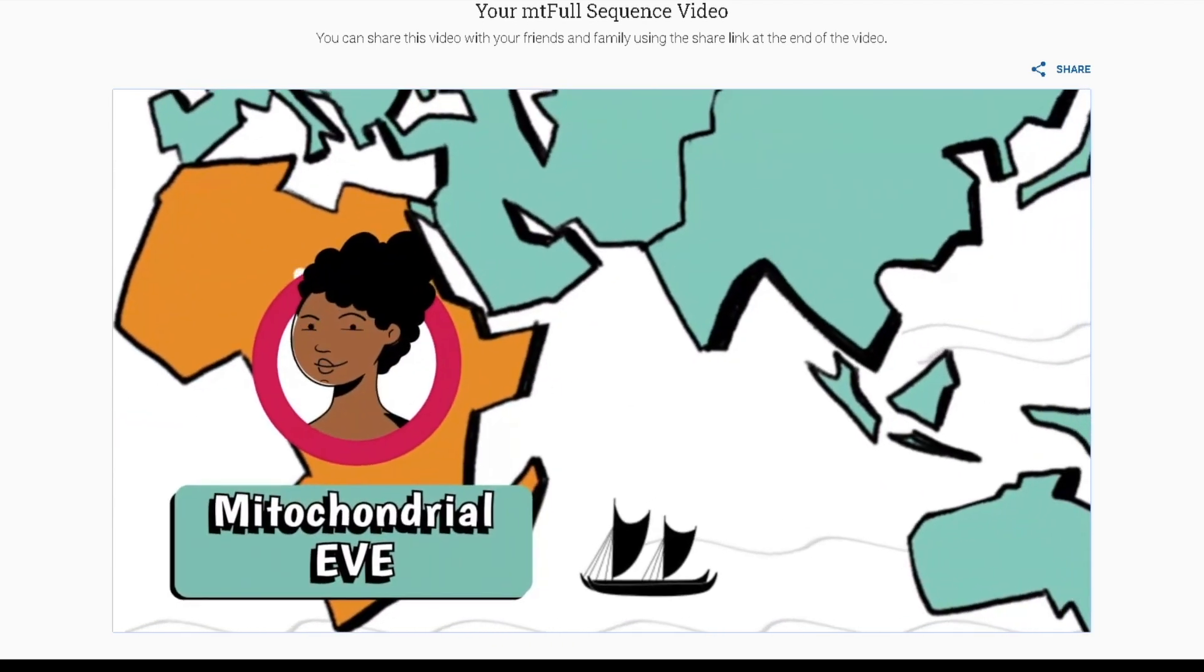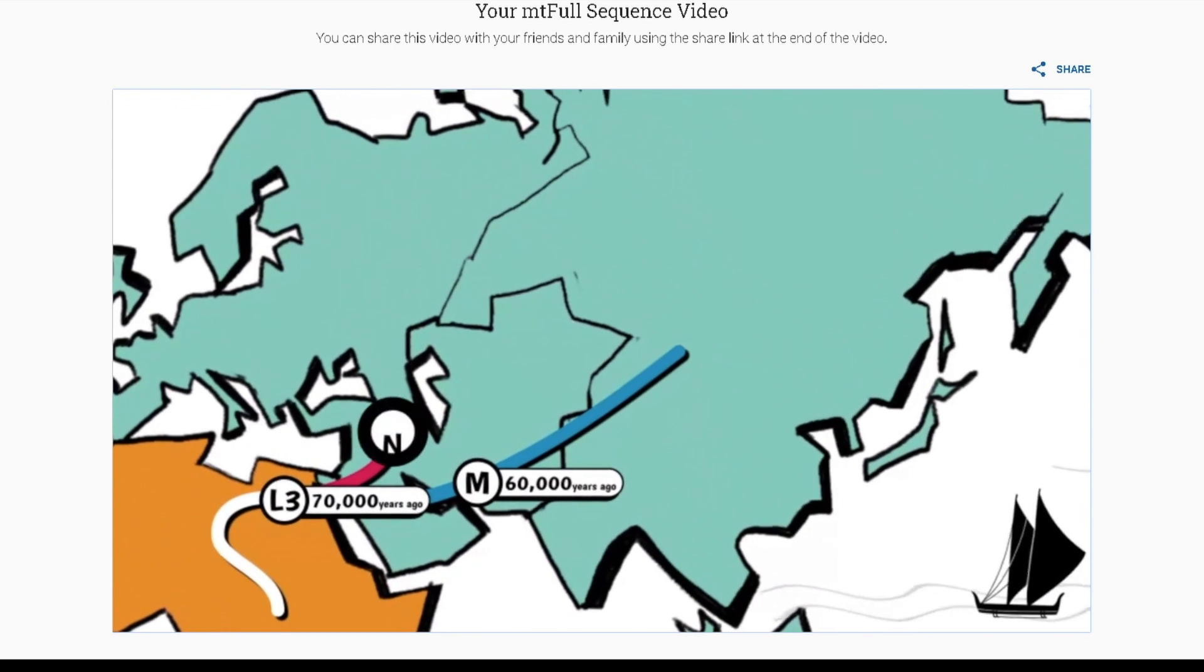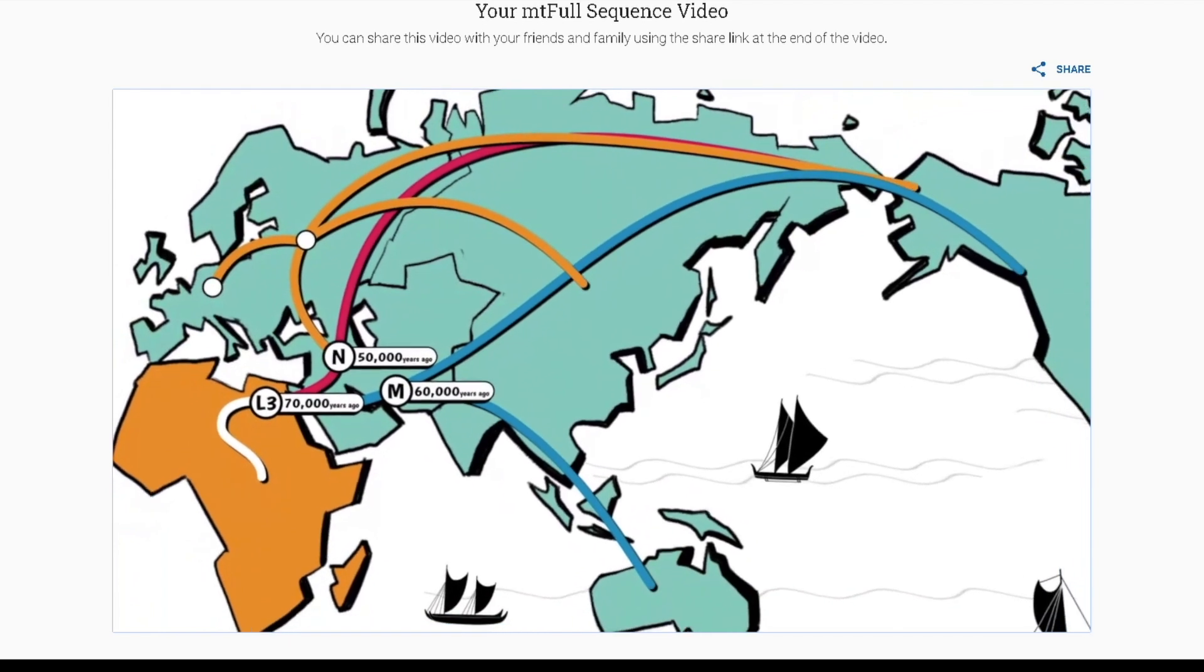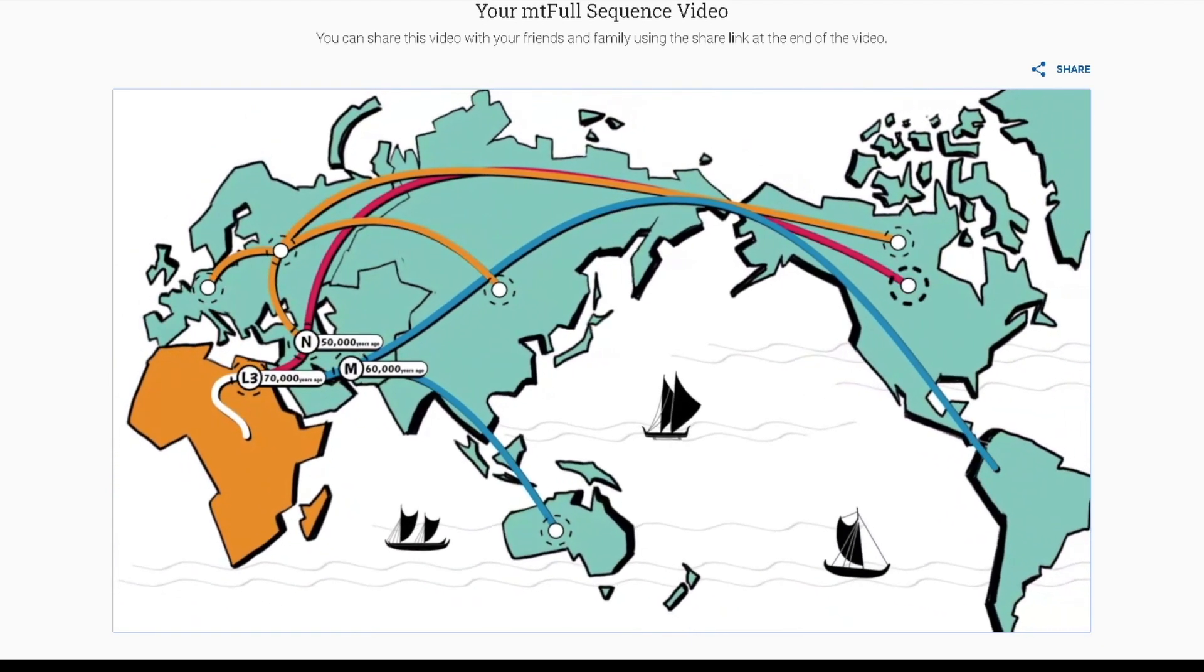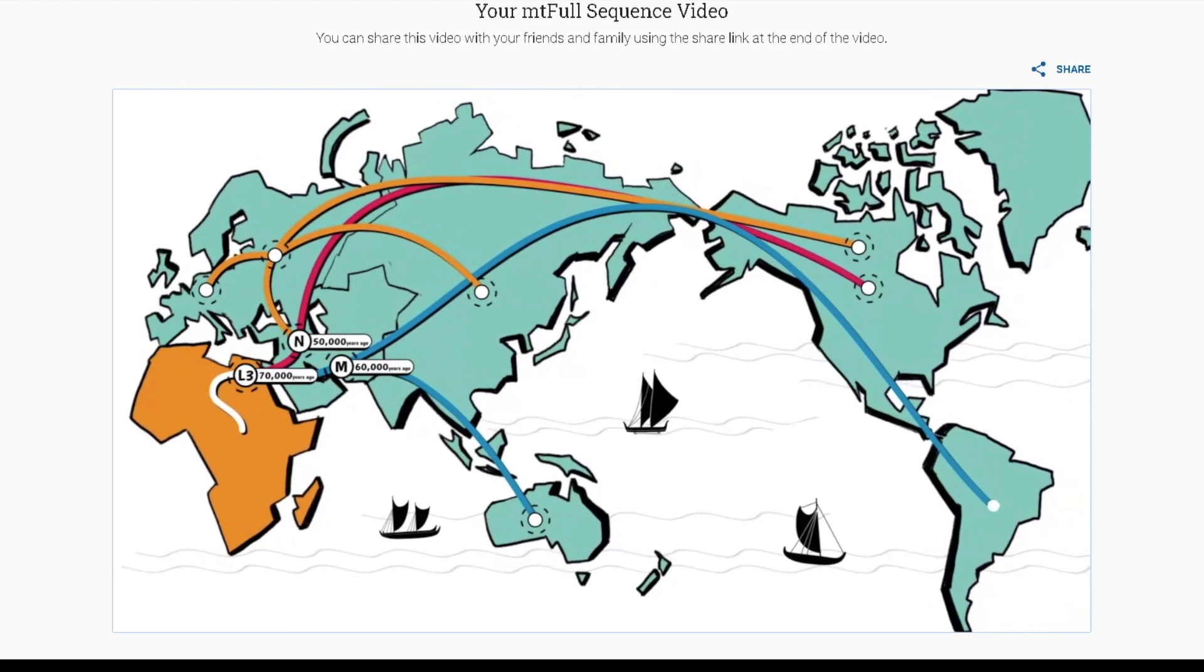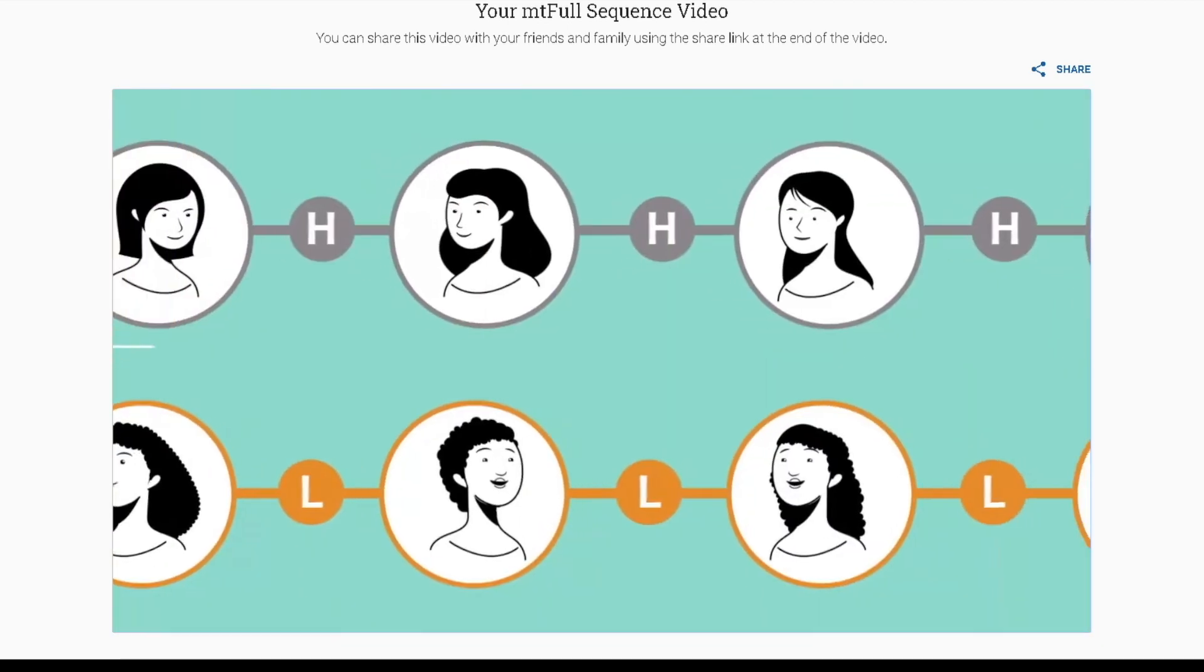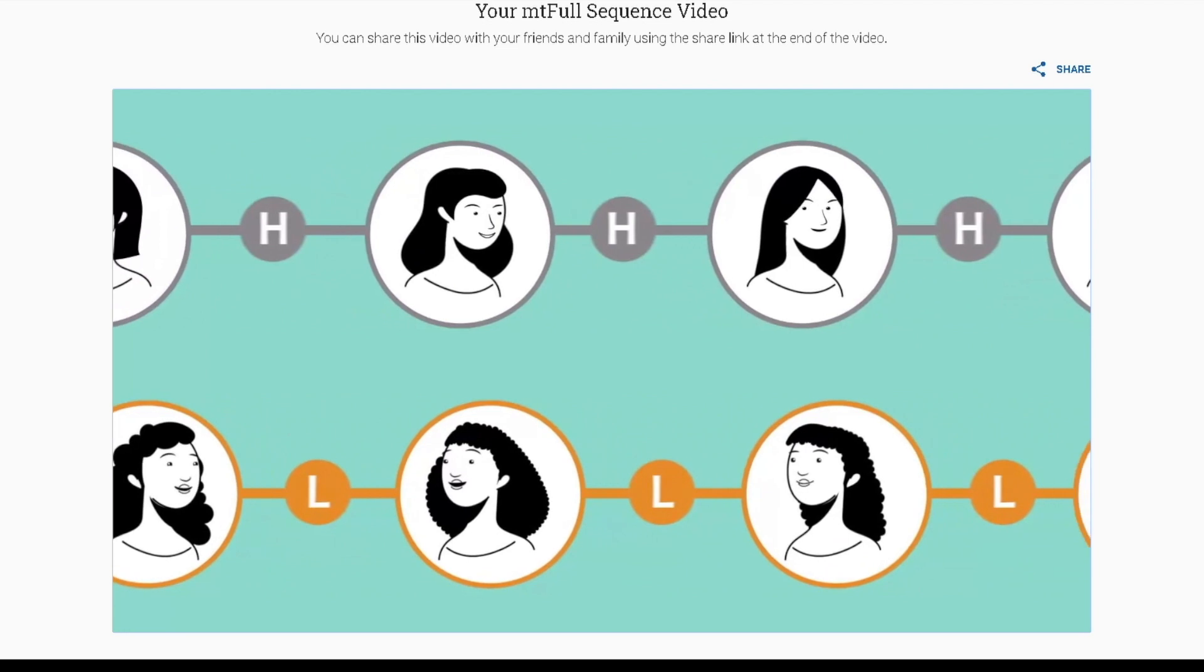Some descendants of our shared mother left Africa, migrating into the Middle East around 70,000 years ago on their way to populate the rest of the world. As humans migrated, different variations of mtDNA were passed down, establishing the mtDNA tree. A branch of this tree is called a haplogroup. Haplogroups differ from each other by a varying number of tiny changes referred to as mutations.